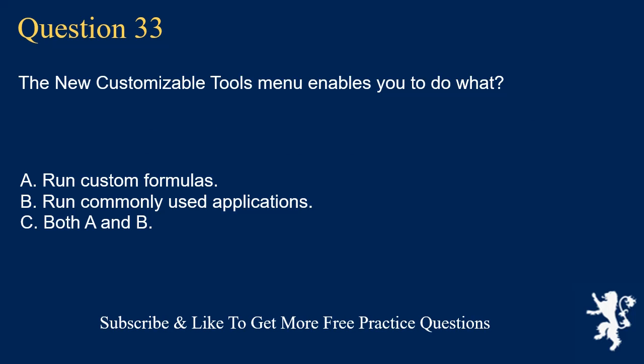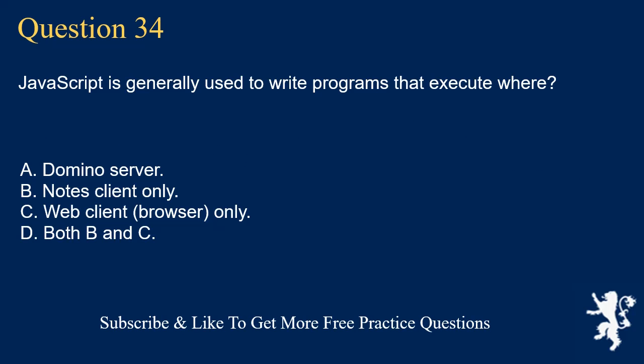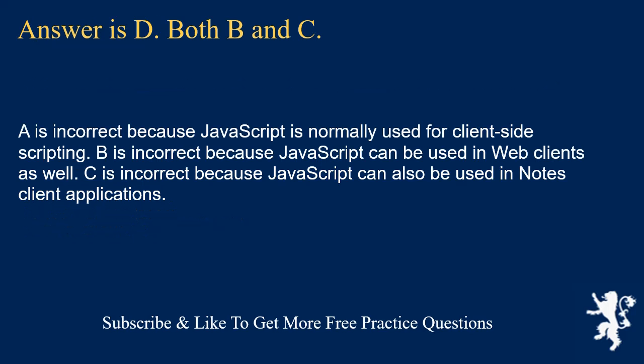Question 33. The new customizable tools menu enables you to do what? Run custom formulas. Run commonly used applications. Both A and B. Answer is C: Both A and B. A is incorrect because the new customizable tools menu enables you to run commonly used applications as well. B is incorrect because the new customizable tools menu enables you to run custom formulas as well. Question 34. JavaScript is generally used to write programs that execute where? Domino server. Notes client only. Web client, browser, only. Both B and C. Answer is D: Both B and C. A is incorrect because JavaScript is normally used for client-side scripting. B is incorrect because JavaScript can be used in web clients as well. C is incorrect because JavaScript can also be used in Notes client applications.